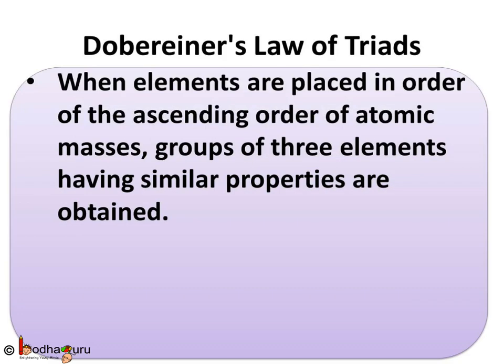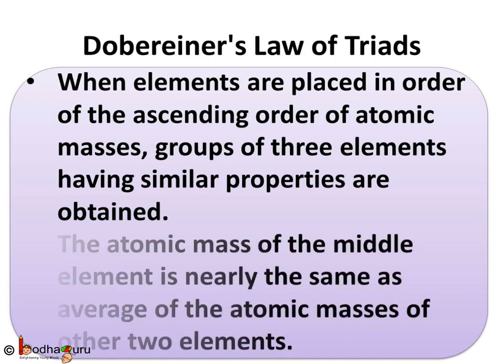To sum up what we learned today: Döbereiner's Law of Triads states that when elements are placed in ascending order of atomic masses, groups of 3 elements having similar properties are obtained, and the atomic mass of the middle element is nearly the same as the average of the atomic masses of the other two elements. That's all for now. Bye-bye.